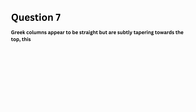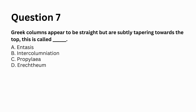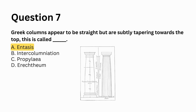Greek columns appear to be straight but are subtly tapering towards the top; this is called blank. a. Entesis, b. Intercolumniation, c. Propylia, d. Erechtheum. Answer: a. Entesis.